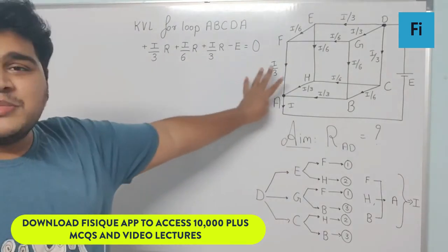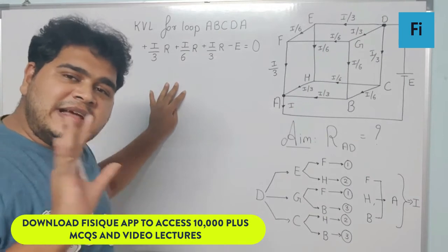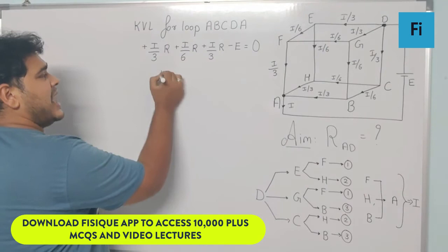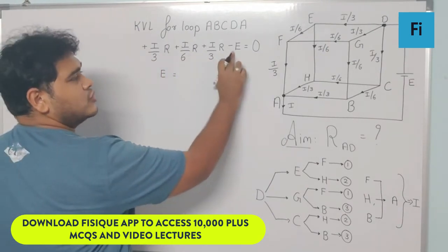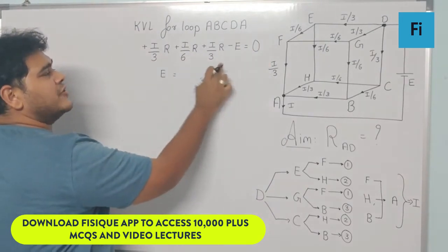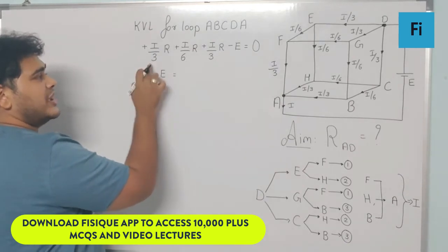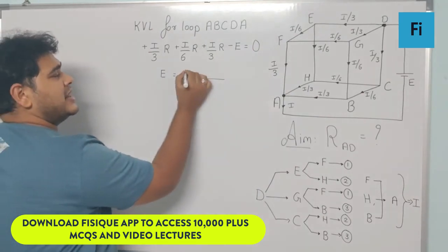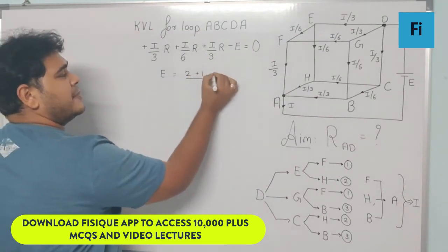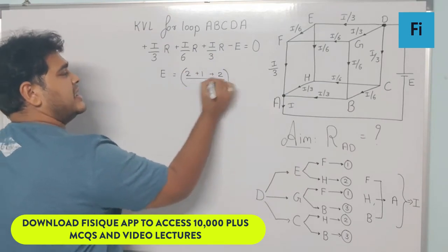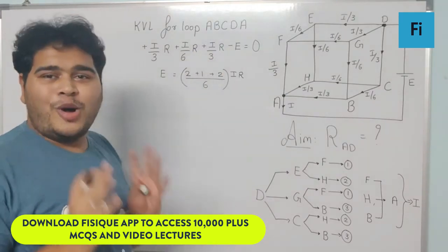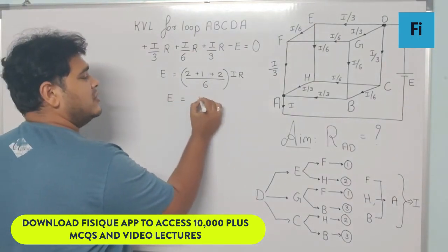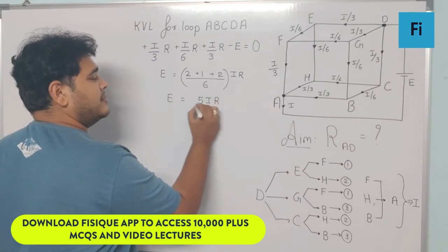From the KVL equation, the total EMF equals: E = I/3 · R + I/6 · R + I/3 · R. Taking LCM as 6, this becomes E = (2IR + IR + 2IR)/6 = 5IR/6.